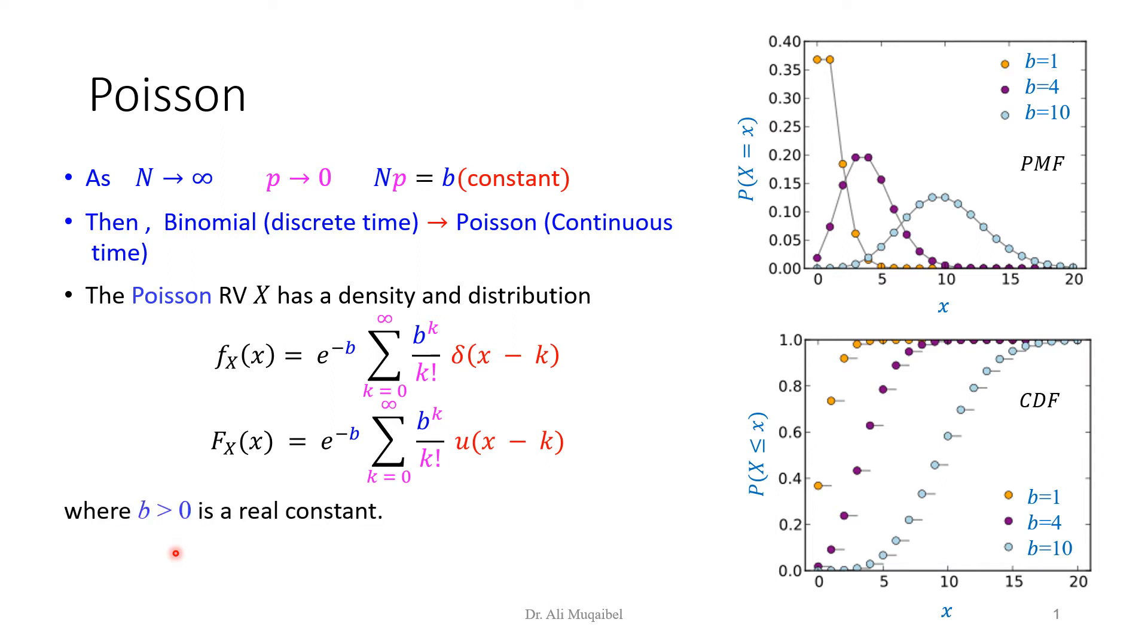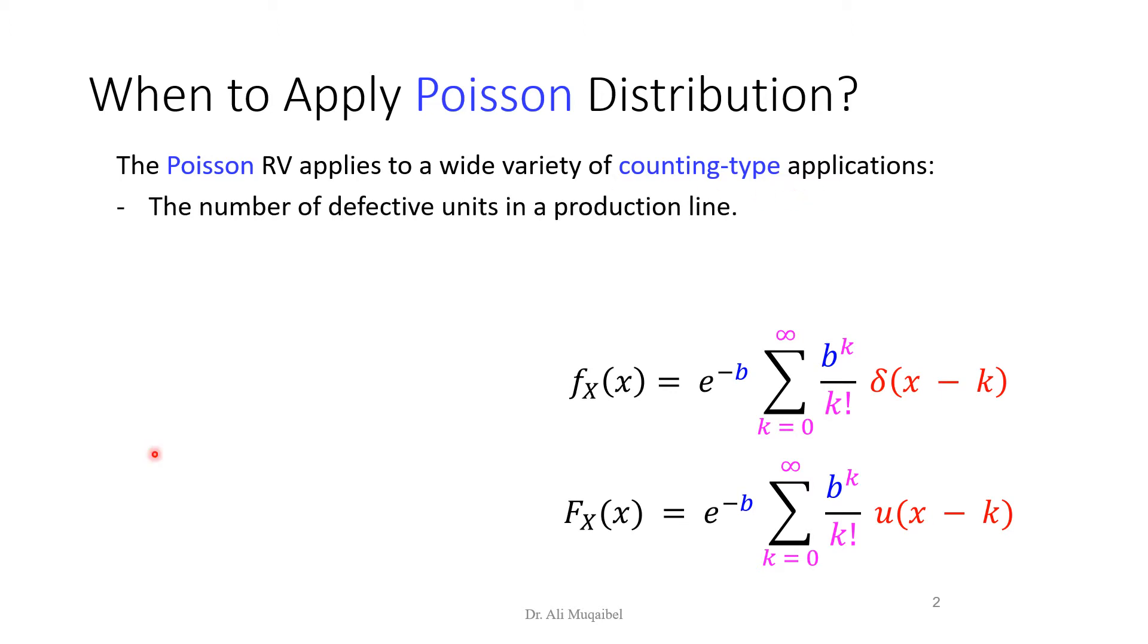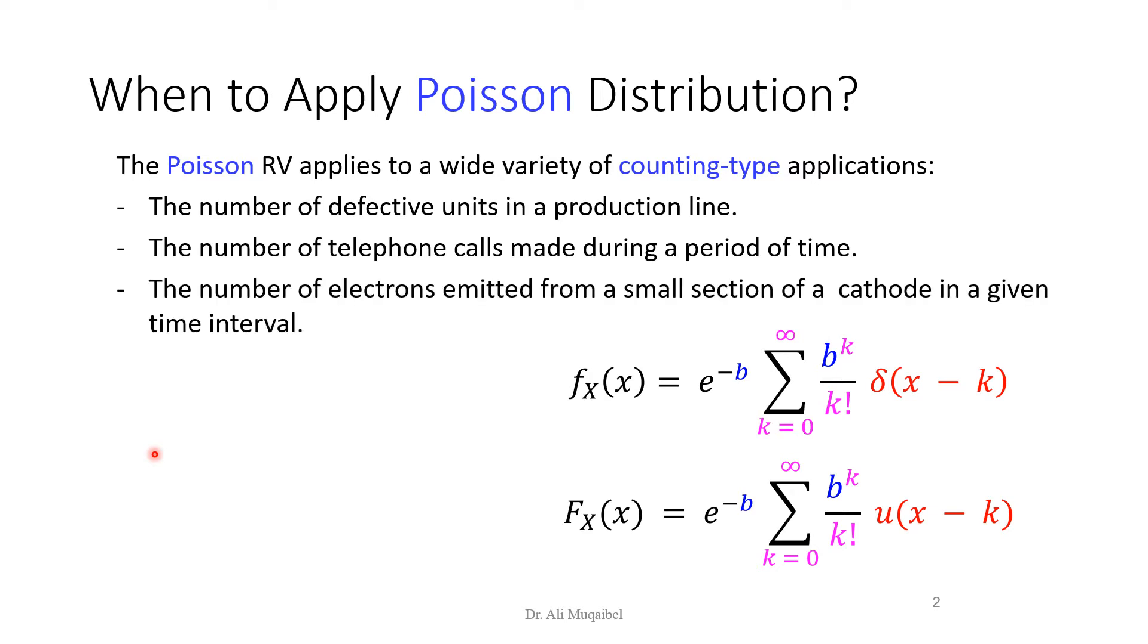I'd like to emphasize that here we are just sharing with you how other distributions look like. B is positive and it's a real constant quantity. The Poisson distribution applies to a wide variety of counting type applications: the number of defective units in a product line, the number of telephone calls made during a period of time, the number of electrons emitted from a small section of a cathode in a given time interval.